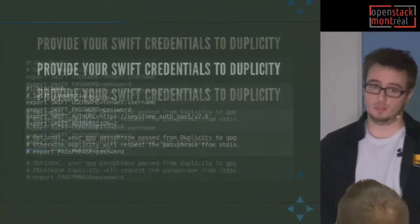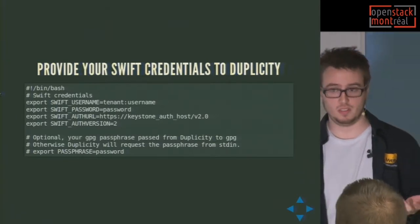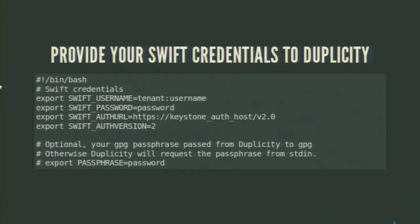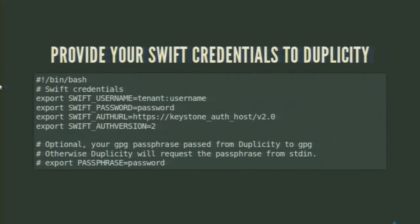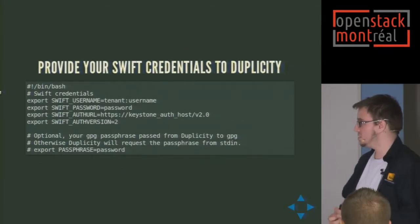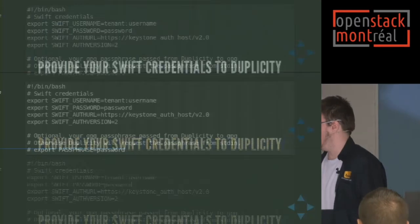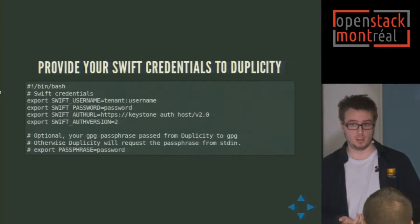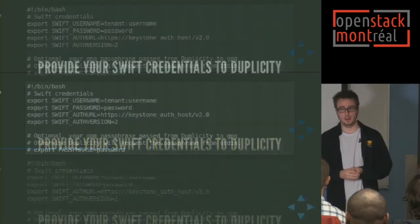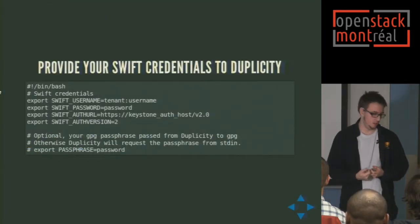Using Duplicity with Swift is really, really easy. You need to find a way to provide Duplicity with the credentials to your Swift object storage service. You can do that inline with parameters like --swift-username and things like that, but it can also read environmental variables. I have a script I use just for exporting credentials — it's not great to have usernames and passwords in environmental variables, but until I find a better way, that's how I use it. When Duplicity does your backups, it will ask for your GPG passphrase — you can provide it as an environmental variable or it will prompt you before doing your backups.